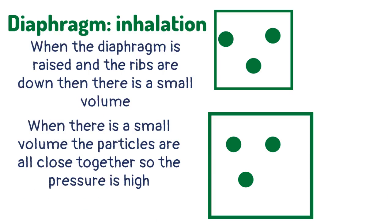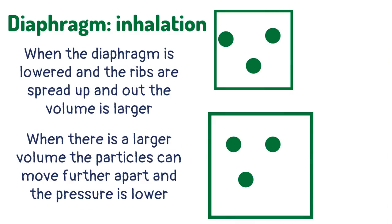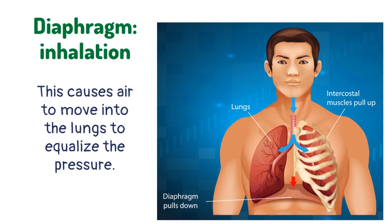When the diaphragm is raised and the ribs are down, there is a small volume. When there is a small volume, the particles are all close together so the pressure is high. When the diaphragm is lowered and the ribs are spread up and out, the volume is larger. When there is a larger volume, the particles can move further apart and the pressure is lower. This causes air to move into the lungs to equalize the pressure.